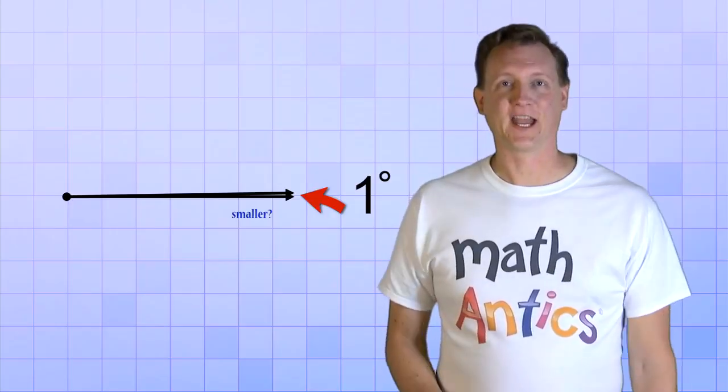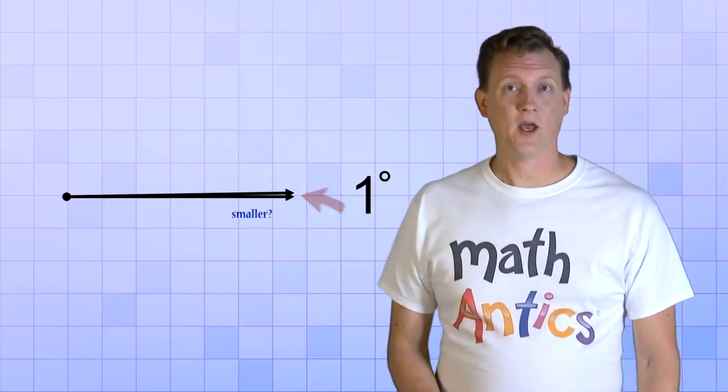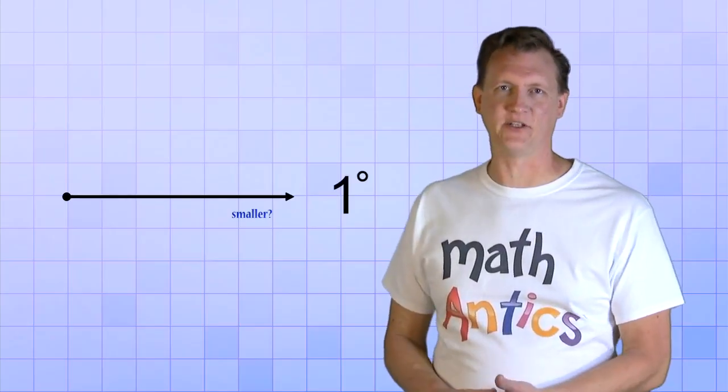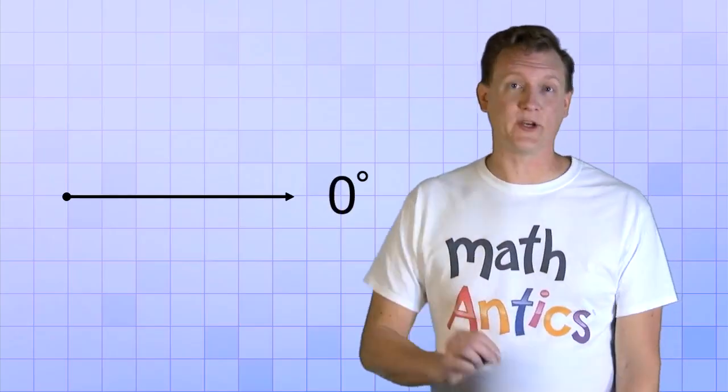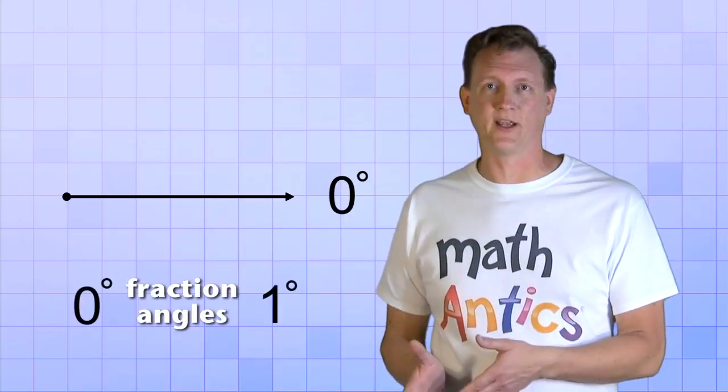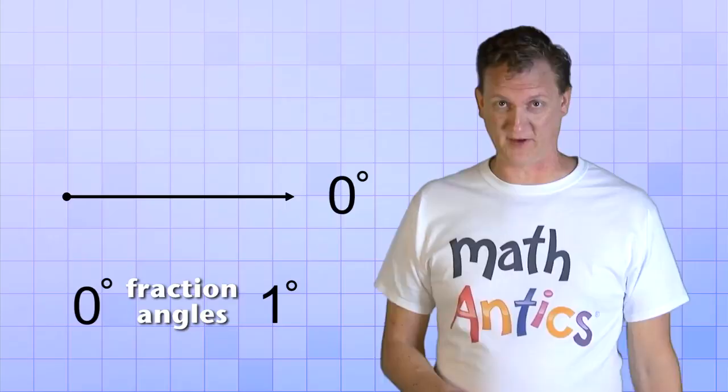We need to zoom in on it to see that it really is an angle. In fact, you might wonder if there could be any angles smaller than 1 degree. Yup, there sure are. And we saw one just a second ago. Before we rotated our top ray, when our rays were exactly on top of each other, that was a 0 degree angle. And there's a whole range of tiny fraction angles in between 0 and 1 degree. But we aren't going to learn about them in this video.